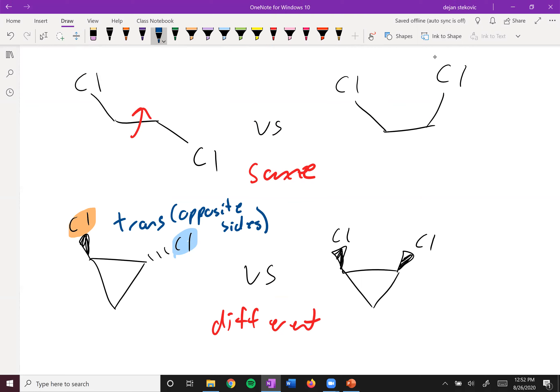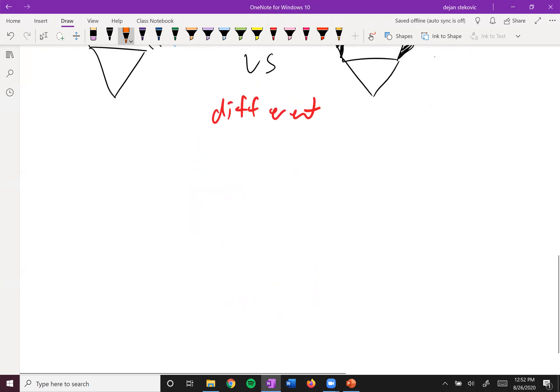This is the trans isomer, and then when they're on the same side we call this cis. So these are two different compounds, isomers of one another, stereo isomers of one another. Same thing with cyclohexane.